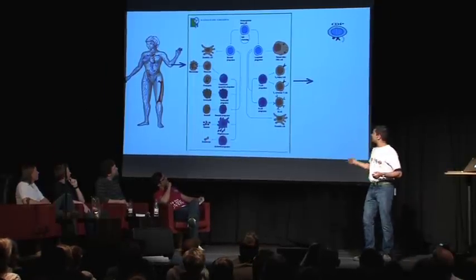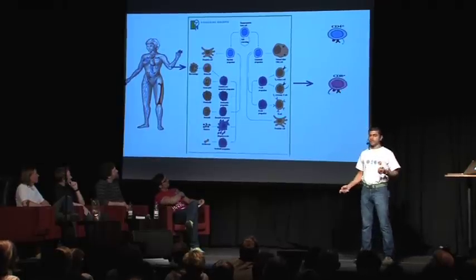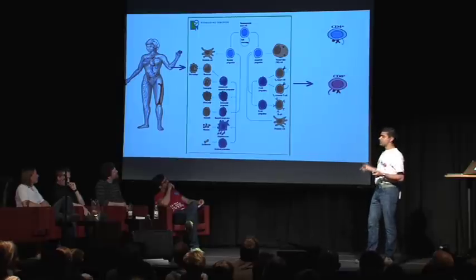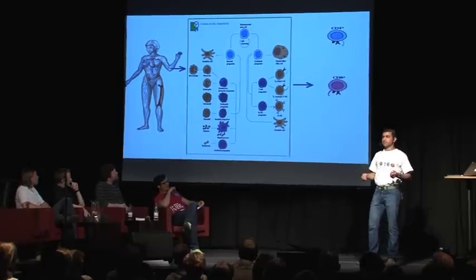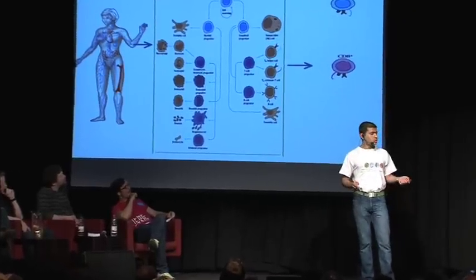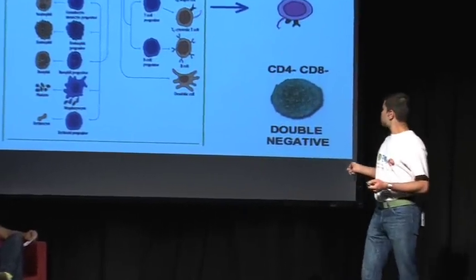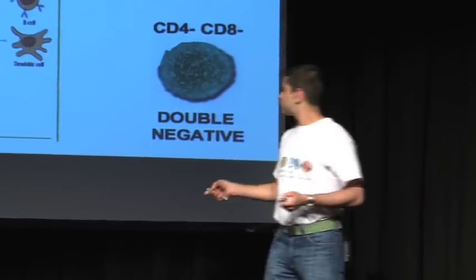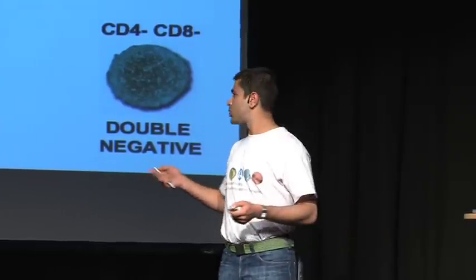For instance, you have this cell called the CD4 positive cell. You have this cell called the CD8 positive cell. Perhaps some of you may have heard of these cells because they are quite popular from a long time. For instance, in the case of HIV infections, you hear of these cells. But what's quite interesting is this set of cells called the CD4 negative, CD8 negative, or also called the double negative T cell. Please keep this cell in mind because that's what my talk would be focused on later.